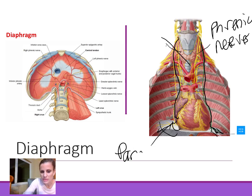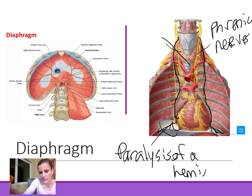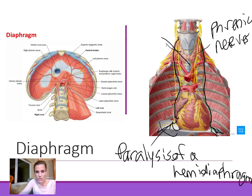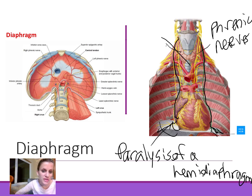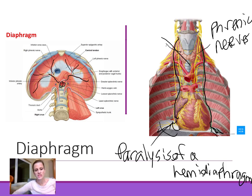Paralysis of a hemidiaphragm results in wasting of that half of the diaphragm, and that half will show paradoxical movements during respiration — moving opposite to the functioning side. Looking at the inferior surface, the inferior phrenic arteries arise from the abdominal aorta on either side and branch out around the inferior portions of the diaphragm.